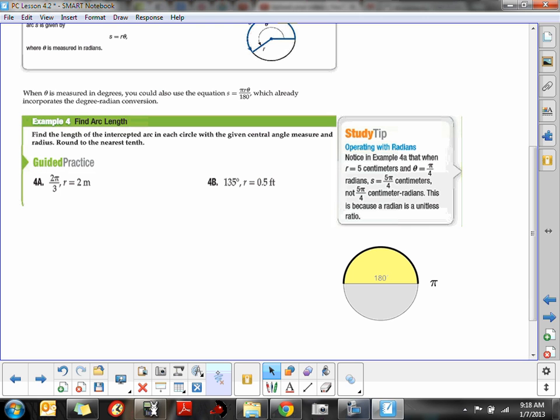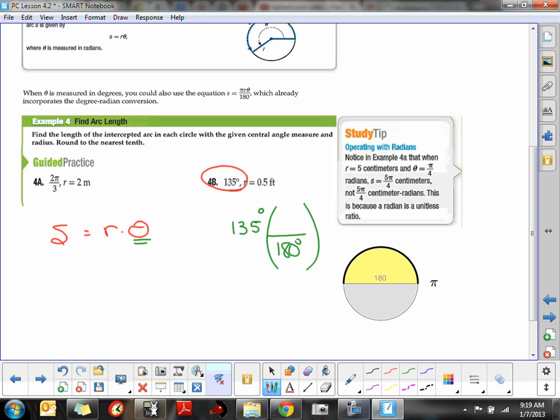The second one is a little bit more complicated because this time they give us the central angle in degrees. The formula that we're given, S equals R times θ, is only workable if θ is given in radians. So the first thing we want to do is we want to convert 135 degrees into radians. So we know that we have this unit converter. So if we have 135 degrees and we want to convert it into radians, what we know is 180 degrees is the same thing as π radians. And if we use this converter, we can get rid of the degrees and be completely into radians.